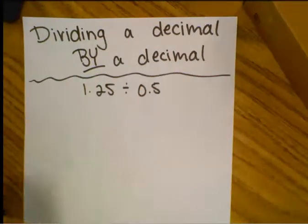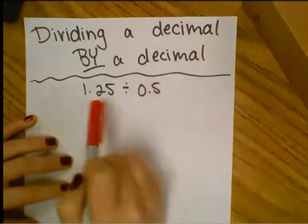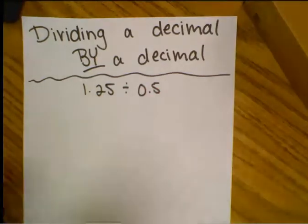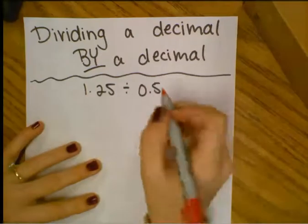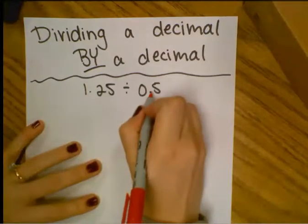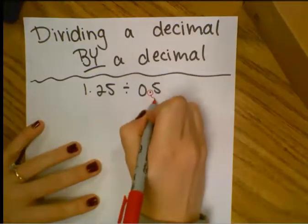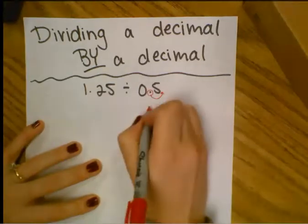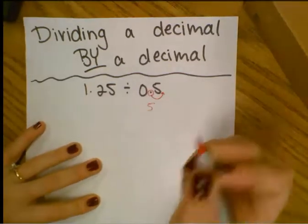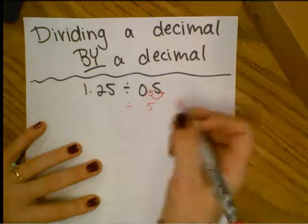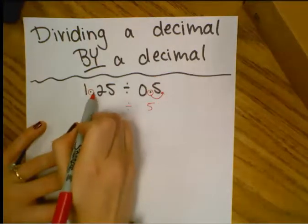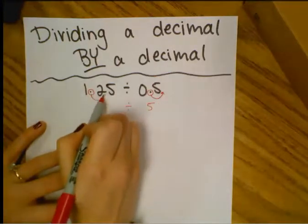So before I even start, I'm actually going to make a change to these numbers without even doing division yet. I'm going to look at my divisor. Right now, if I move my decimal one spot to the right, it would move the decimal and make this number 5. Well, if I move this one one spot, then I can only move this decimal one spot to the right as well.